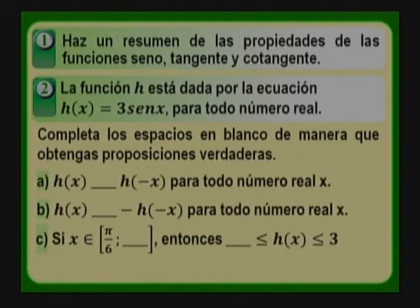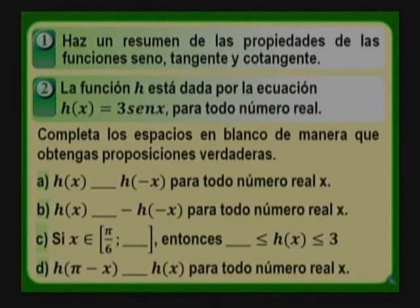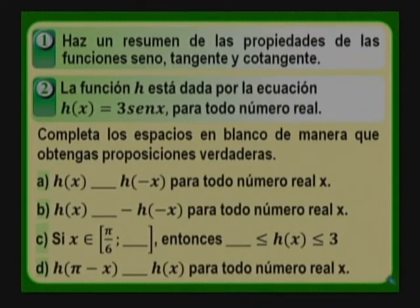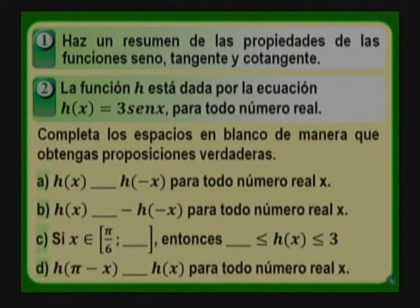Es importante resolver este ejercicio: en pruebas de ingreso han aparecido funciones trigonométricas definidas en un intervalo de su dominio, como en el 2018. Para el inciso D, h(π − x) debe compararse con h(x) para todo número real. Se sugiere pensar en los cuadrantes y en las fórmulas de reducción: qué sucede en el cuadrante donde se encuentra π − x, y cómo se comparan 3·seno(π − x) y 3·seno(x).